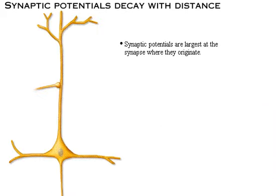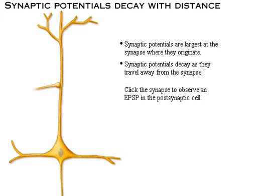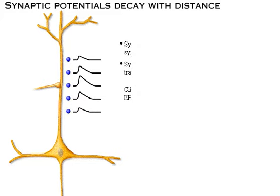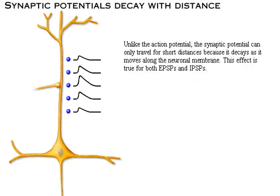Synaptic potentials are largest at the synapse where they originate, and decay as they travel away from the synapse. Click the synapse to observe an EPSP in the post-synaptic cell. Unlike the action potential, the synaptic potential can only travel for short distances because it decays as it moves along the neuronal membrane. This effect is true for both excitatory and inhibitory post-synaptic potentials.